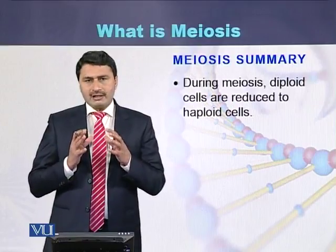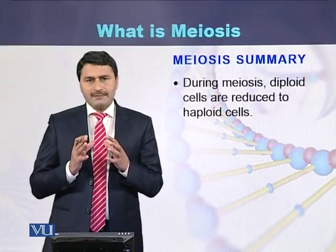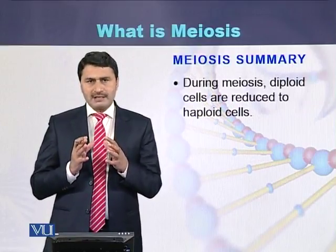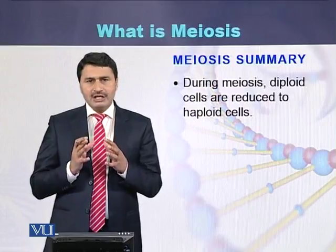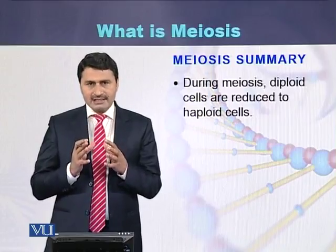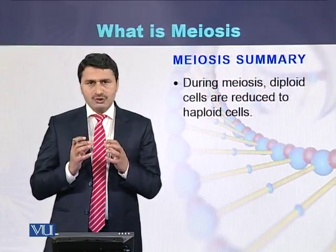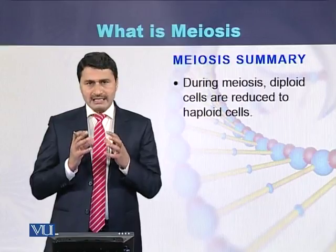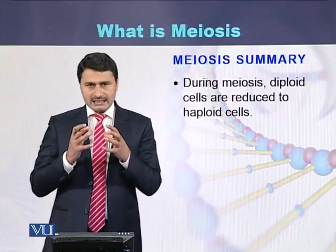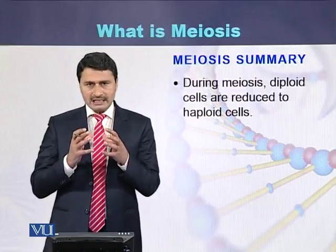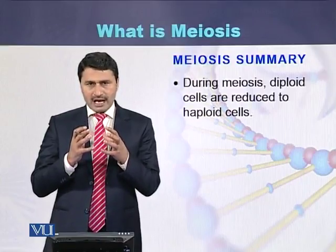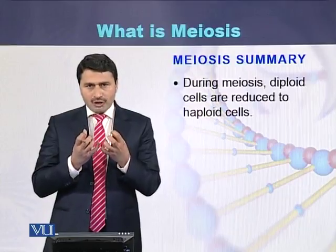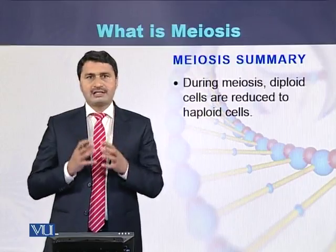So we can conclude that meiosis is a process by which diploid cells are reduced to haploid cells. As a result, a single diploid cell will produce 4 haploid cells. Remember that these cells are reproductive cells.